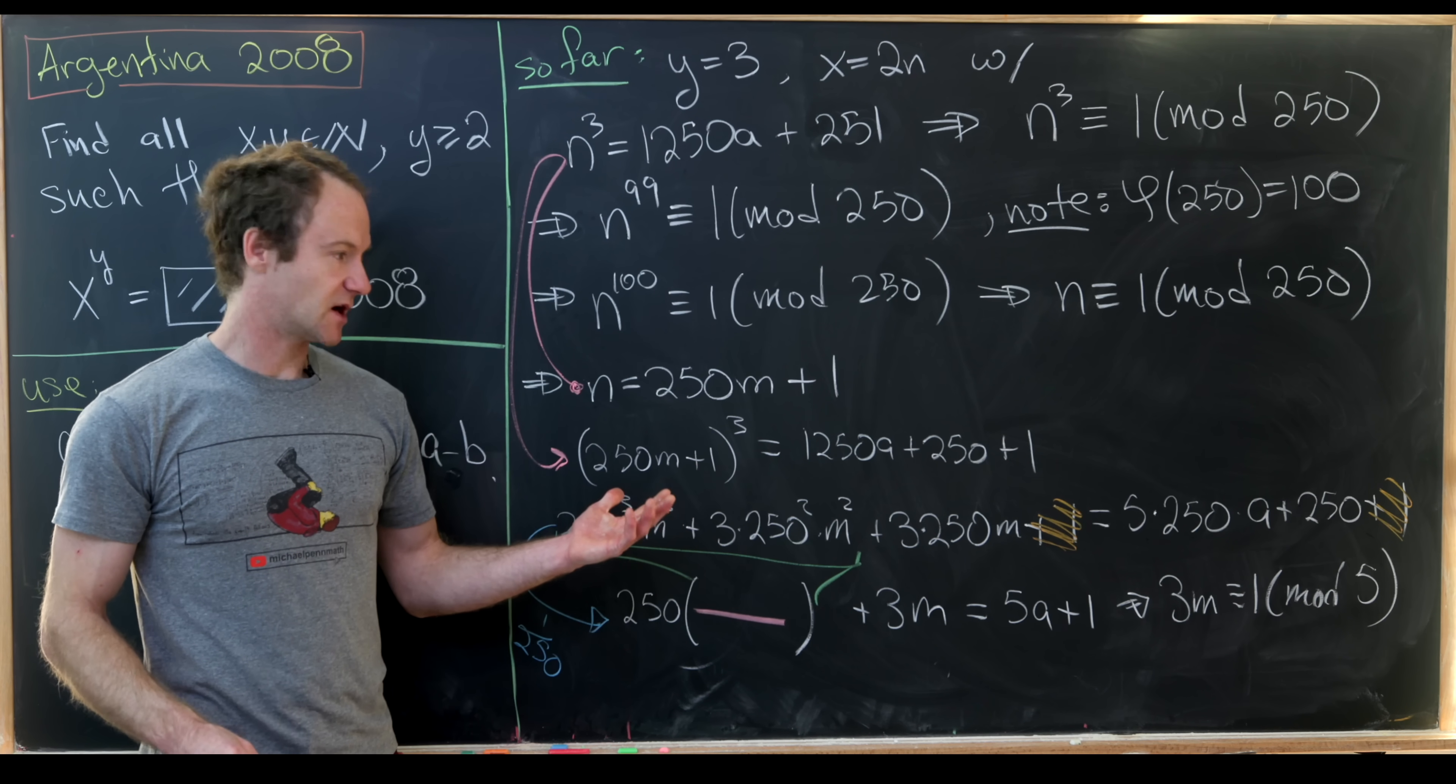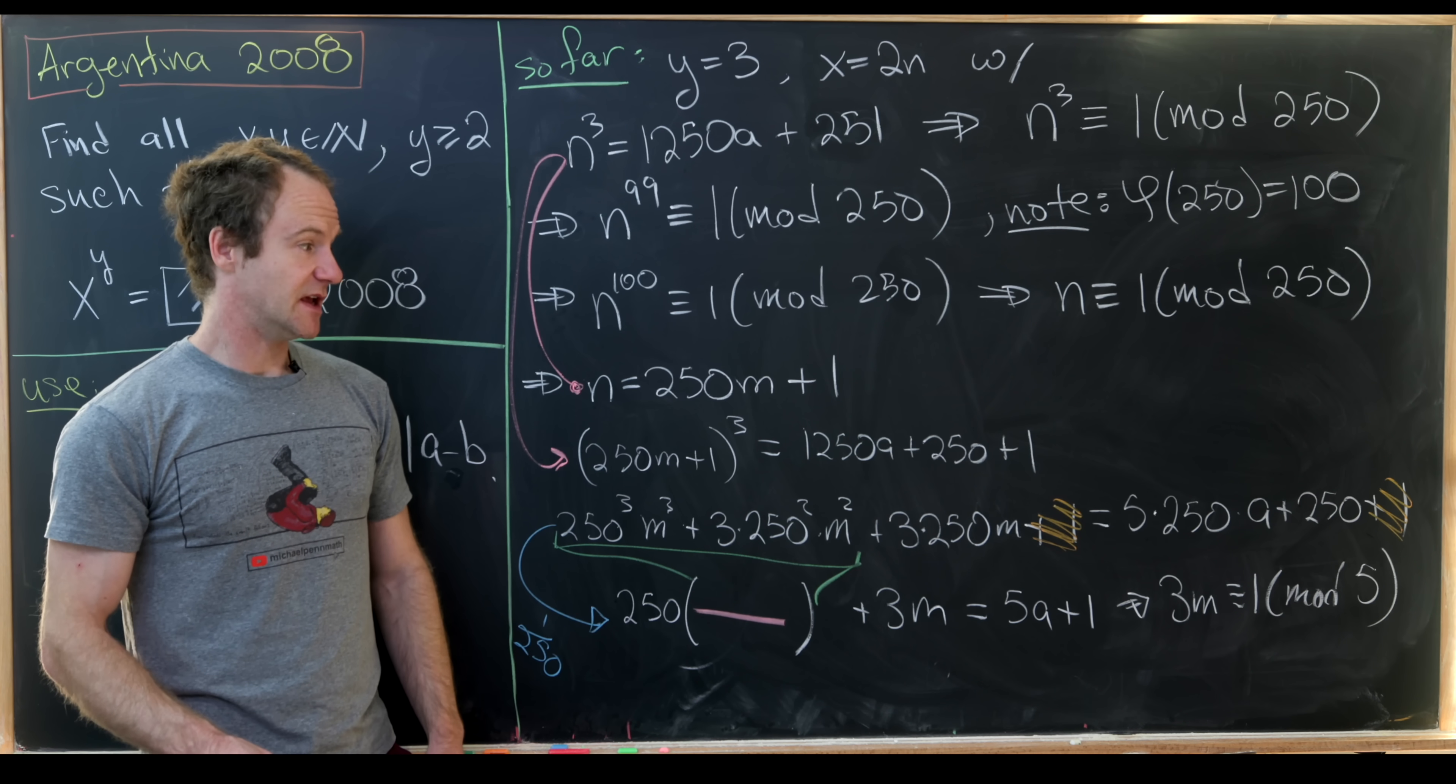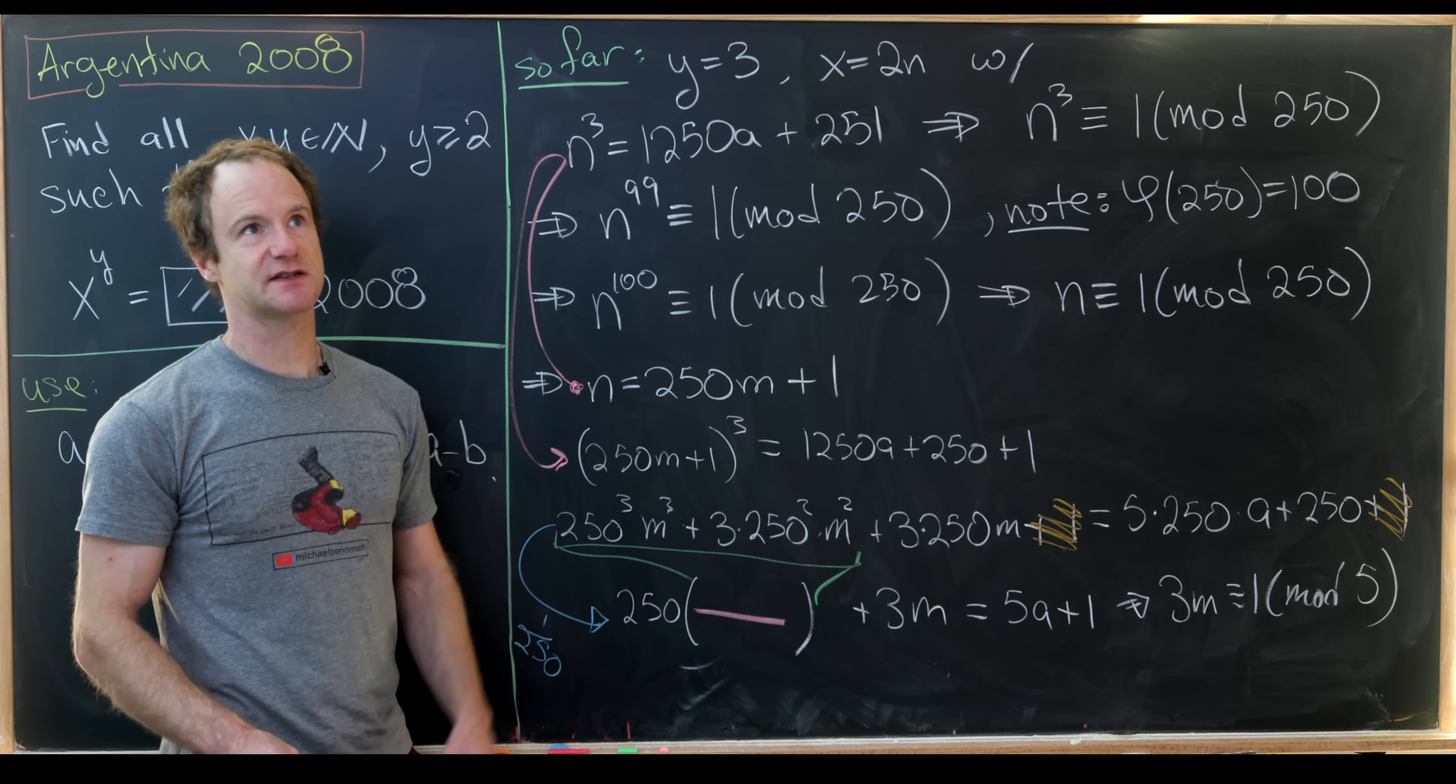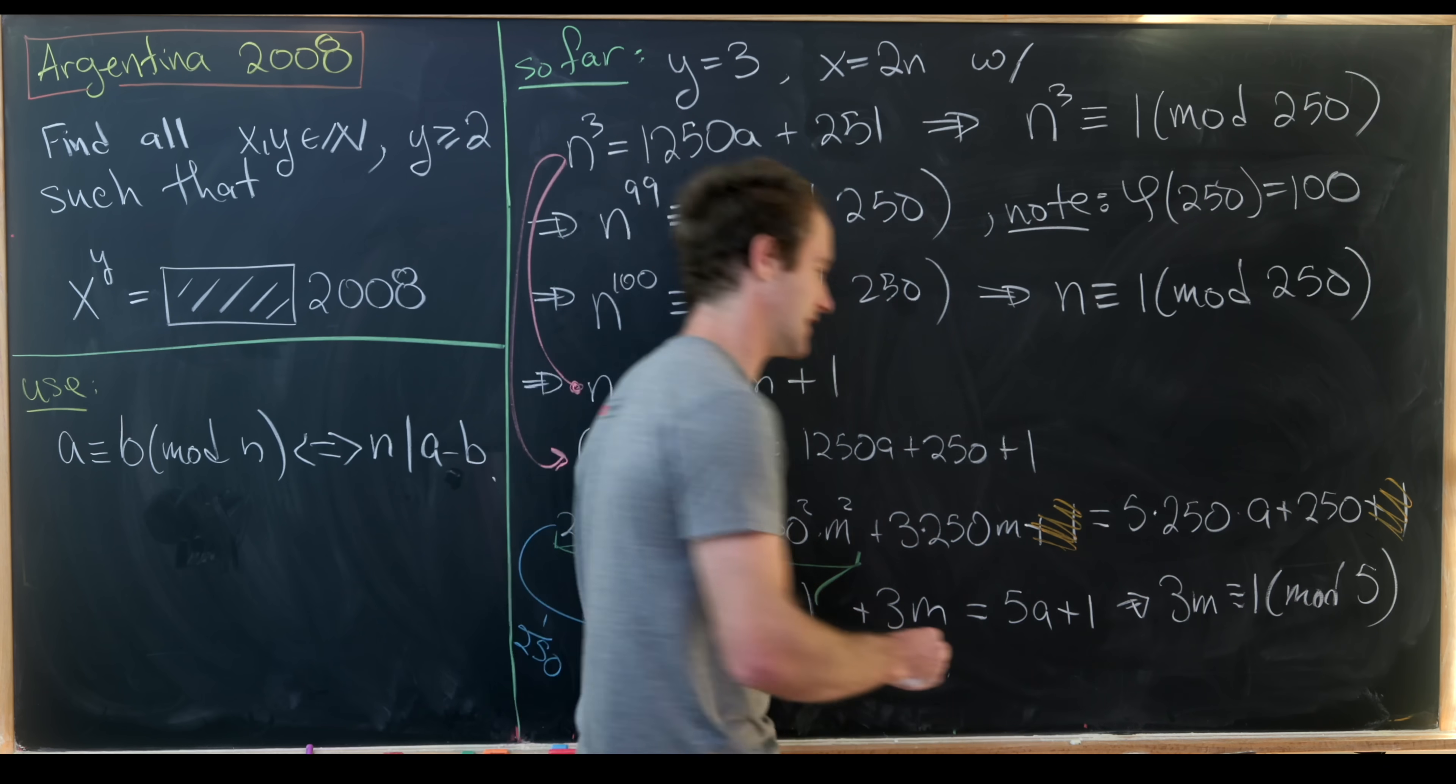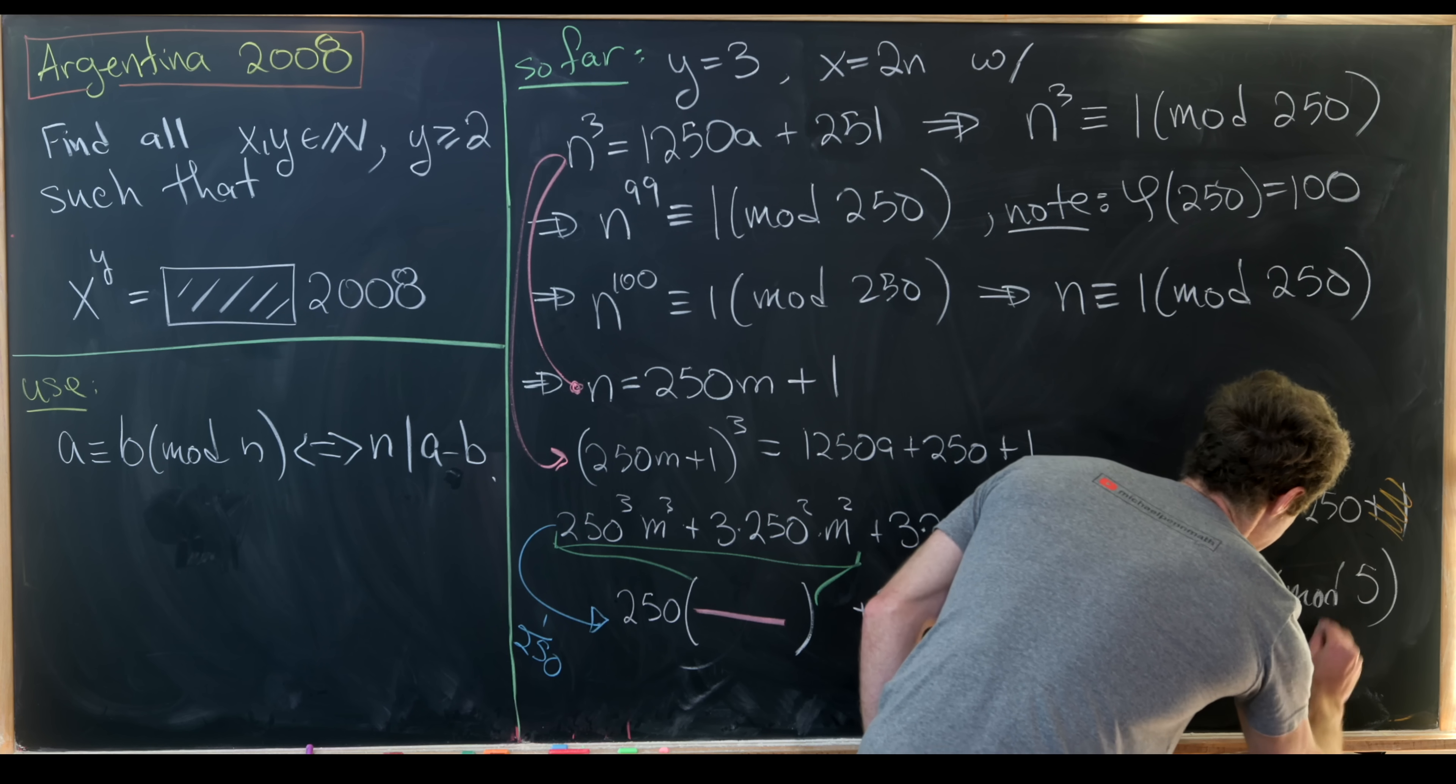But we can solve that congruence. The inverse of 3 mod 5 is 2 mod 5 because 3 times 2 is 6, which is 1 mod 5. So that tells us that m is congruent to 2 modulo 5.